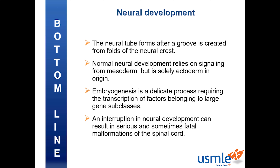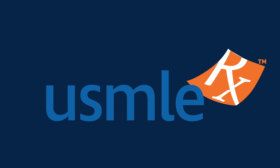My takeaways: The neural tube forms after a groove is created from folds of the neural crest. Normal neural development relies on signaling from mesoderm, but it is solely ectoderm in origin. Embryogenesis is a delicate process requiring the transcription of factors belonging to a large gene subclass. An interruption in neural development can result in serious and sometimes fatal malformations of the spinal cord. Thanks for joining me on this journey to review neurology. Please take a moment to rate my video. Good luck on your studies and future in medicine.